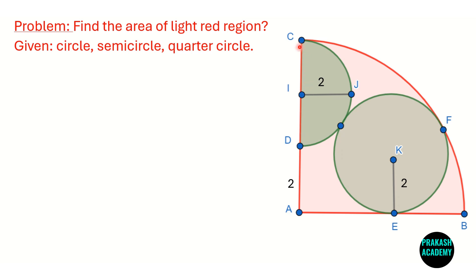Hello friends. In this problem, a quarter circle is given, and inside this quarter circle we have a full circle and one semi-circle. This semi-circle and full circle touch each other at a point, and the line AB, the radius of the quarter circle, is tangent to the full circle at point E. Similarly, the full circle touches the quarter circle at point F, and the radii of these two circles are equal — both 2 units. We have to find the area of the light red shaded region.